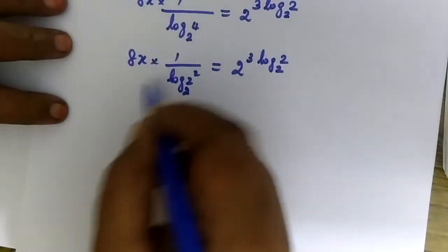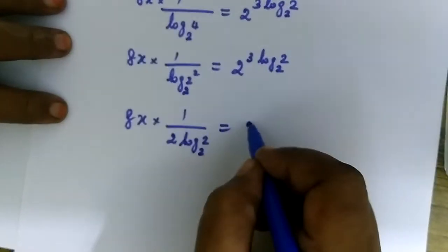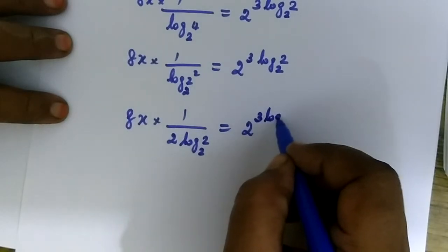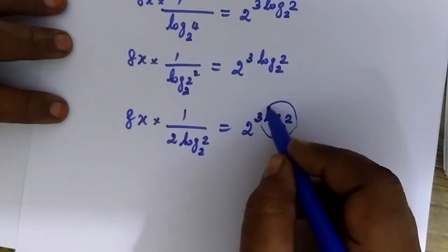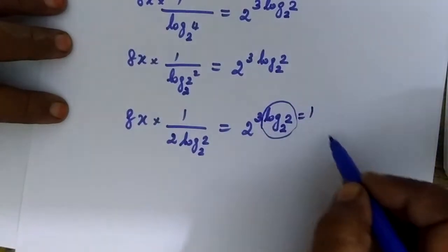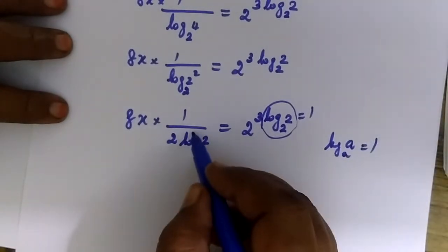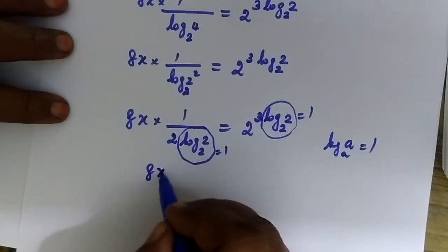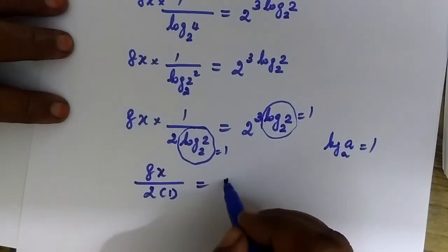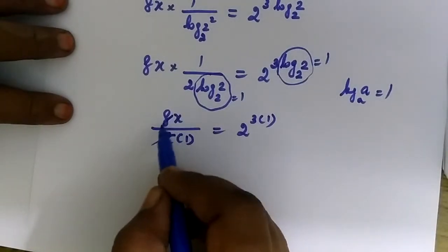Again this 2 will come to the front. Here is log 2 to the base 2, this is equal to 2, power only 8y. Log 2 to the base 2 is complete and equal to 1. So here also log 2 to the base 2 is equal to 1. So 8x by 2, bracket 1, equal to 2. Using the class 1 rule, you can cancel this.